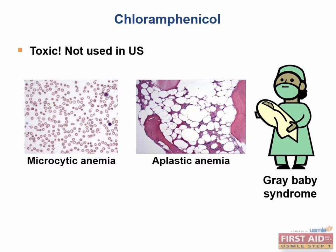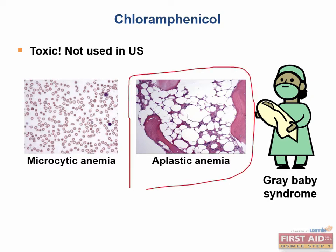Now consider the image of the bone marrow shown here. There really aren't any cells in it — instead there is empty space representing lipid droplets. This bone marrow is what is called aplastic, meaning without cells, because this drug is toxic to the rapidly dividing cells found in the bone marrow.